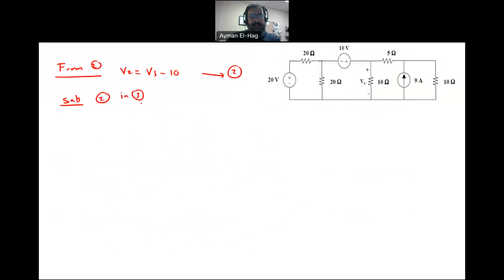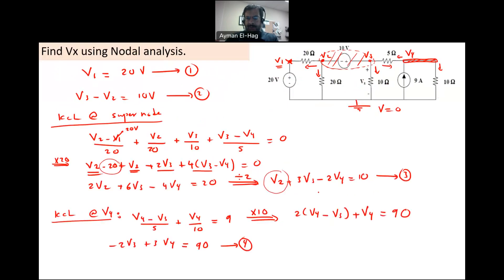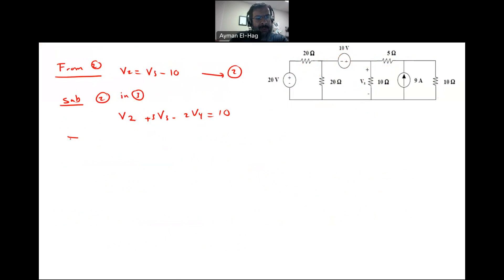So I will come here, take V2 and substitute its value. So I will substitute 2 in equation number 3. Let me rewrite the equation again. We'll have V2 plus 3V3 minus 2V4 is equal to 10. This is my equation number 3. Now I will substitute the value of V2. So we will have V3 minus 10, this is your V2, plus 3V3 minus 2V4 is equal to 10. V3 plus 3V3, so this is 4V3 minus 2V4 equal to 20. I will divide everything by 2, so we'll have 2V3 minus V4 is equal to 10. And this will be my equation number 5.